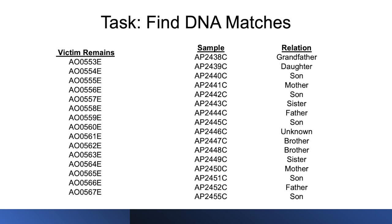The task is to identify the victim remains using the family references. The lab wasn't able to do anything with this information. However, the South African police at that time were speaking to CyberGenetics about some casework, and they also knew that we had worked on the World Trade Center disaster, where we used the TrueAllele computer to identify the victim remains there — using kinship information and also personal effects, putting all that information together to identify victims.